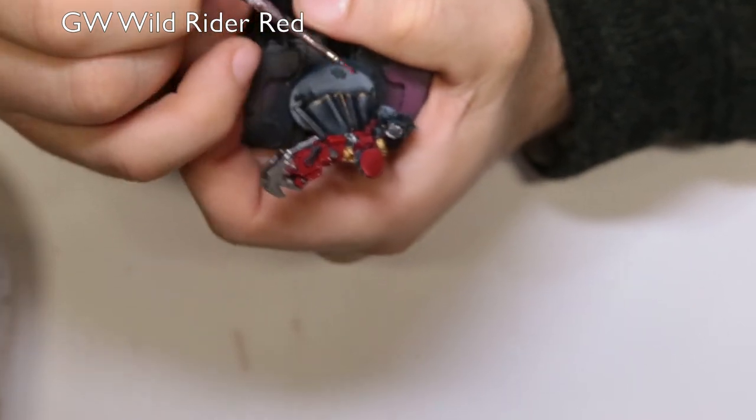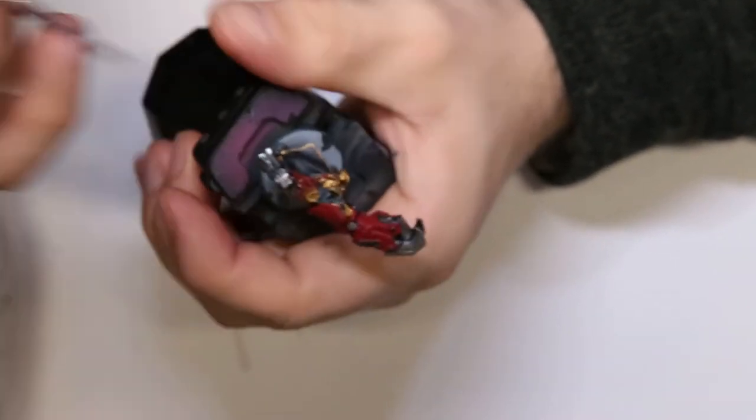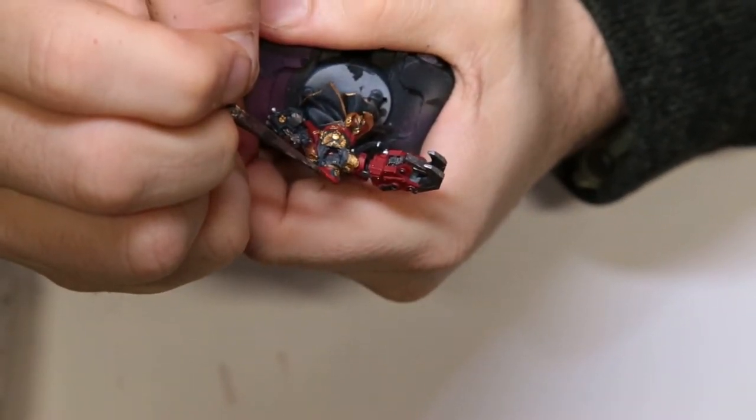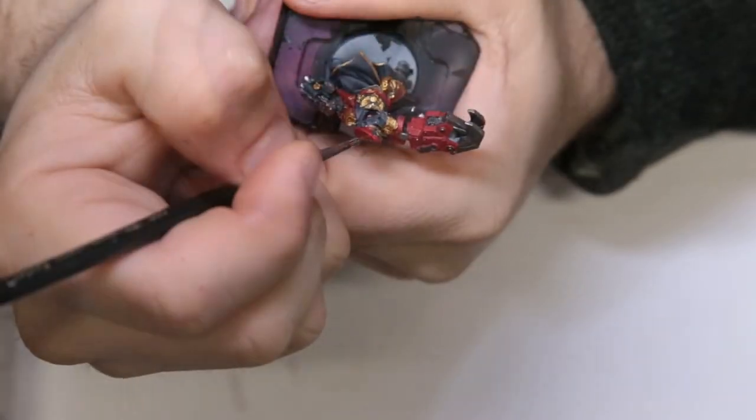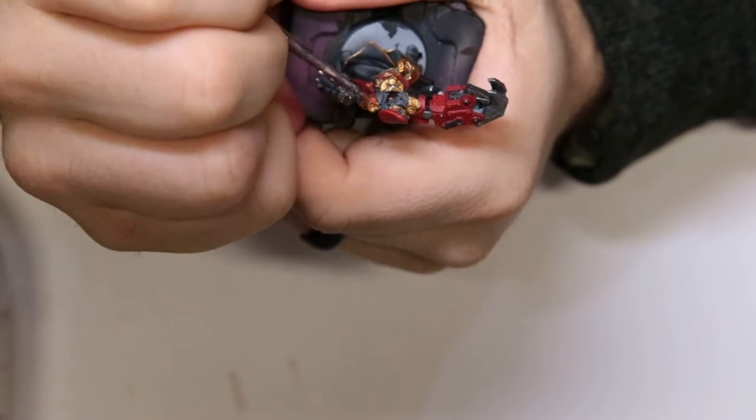Here we come in with some Wild Rider Red. We're just going through and putting in some nice crisp edge highlights throughout the model. Again, very difficult to get this on film for you all, but just take your time, put these edge highlights in, use the edge of your brush where you can, like I am, and just lay these in. Take your time though.